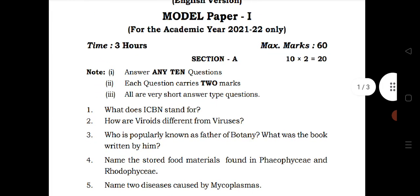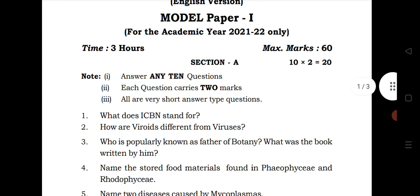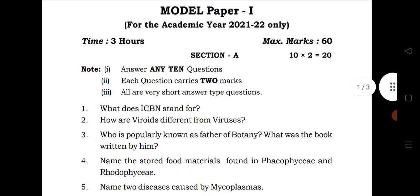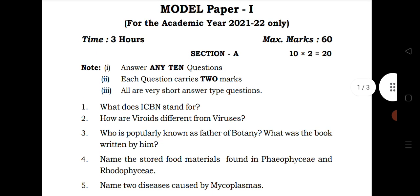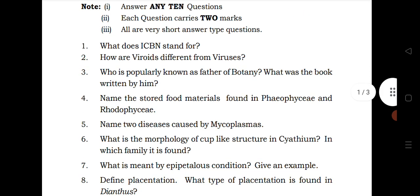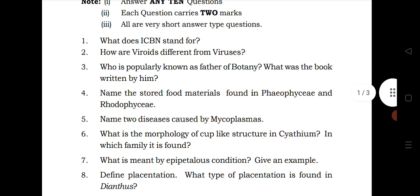Let us see the first question of Botany, the latest model paper of TS. The first question is from the chapter Living World, second question is from Biological Classification, third question is from the chapter Science of Plants.